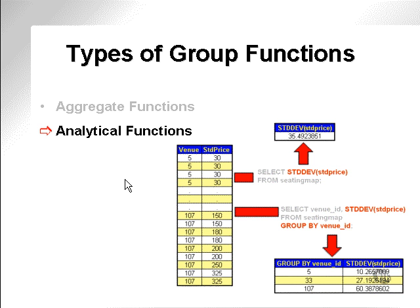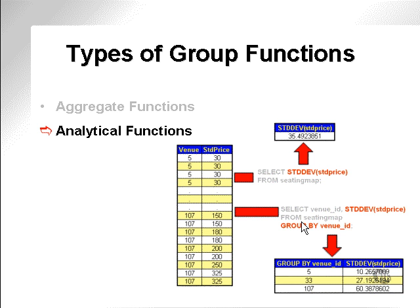Analytical functions. What do we mean by analytical functions? An analytical function is a function that either performs an analysis or ultimately can be used to perform an analysis — a function such as the standard deviation. Standard deviation is a statistics function that analyzes data, does a calculation on it, and comes up with a number or groups of numbers. What I've actually got here is two different standard deviation functions: one on the whole of the seating map table, and one on each part of a seating map table where it is broken up into three different groups.